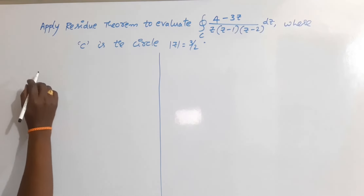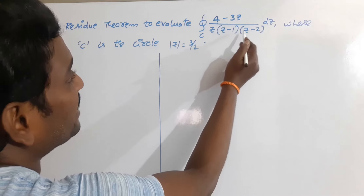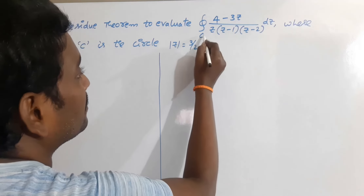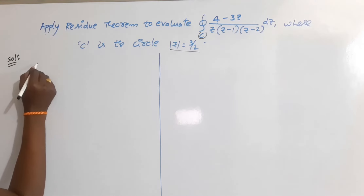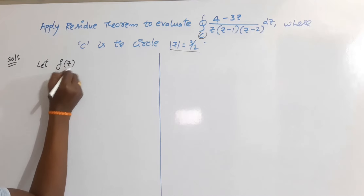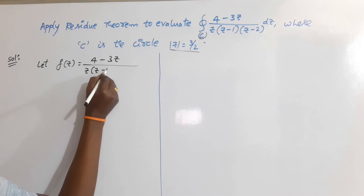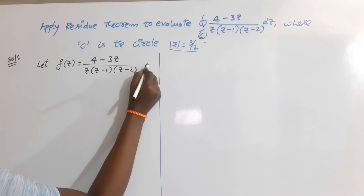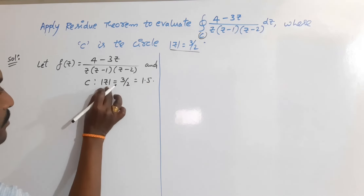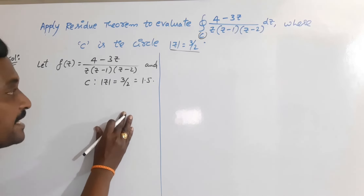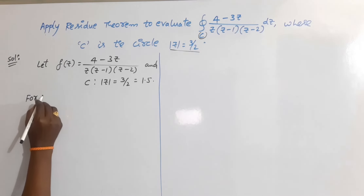Now see the example on the residue theorem. Apply the residue theorem to evaluate the circular integral of (4 − 3z) / [z(z−1)(z−2)] dz, where C is the circle |z| = 3/2. Solution: take the given function f(z) = (4 − 3z) / [z(z−1)(z−2)] and C is the circle |z| = 1.5, which is a circle centred at the origin with radius 1.5.